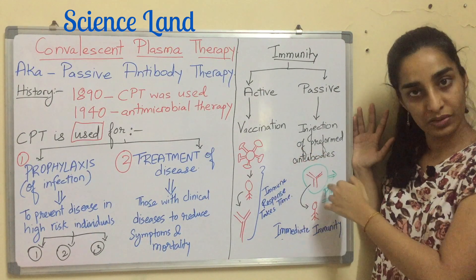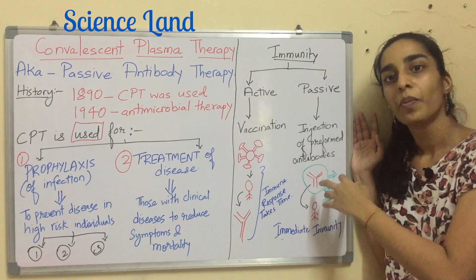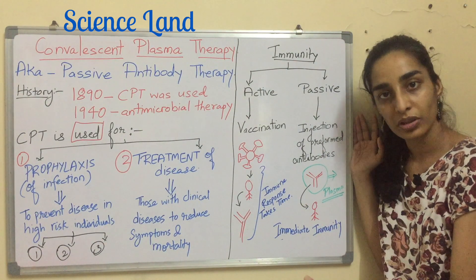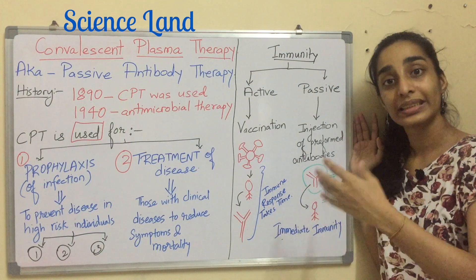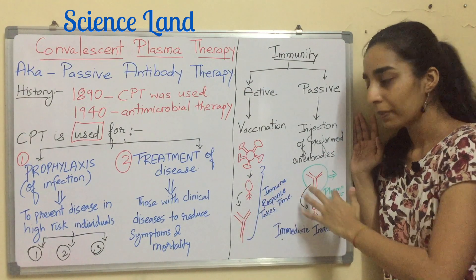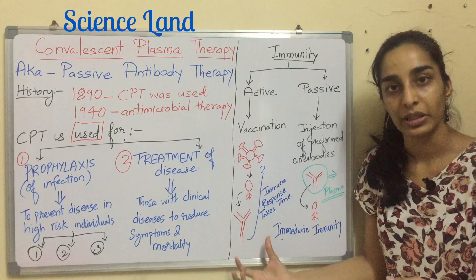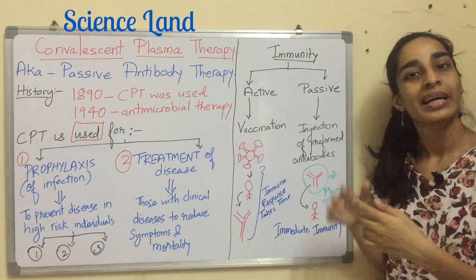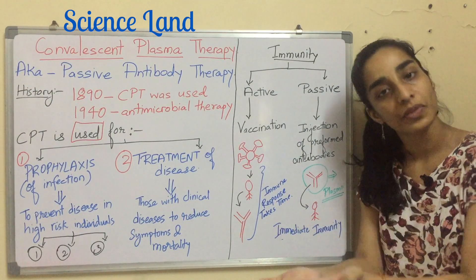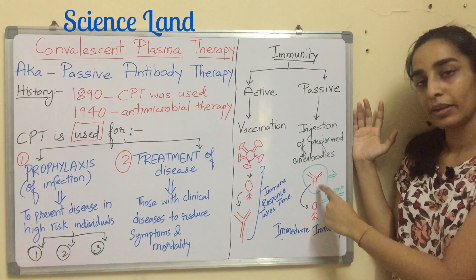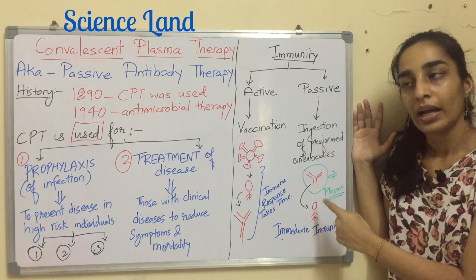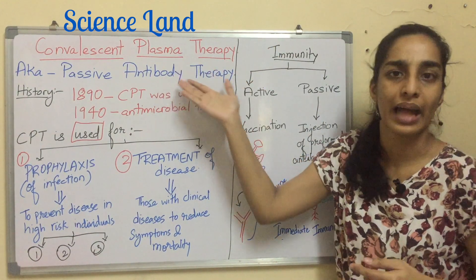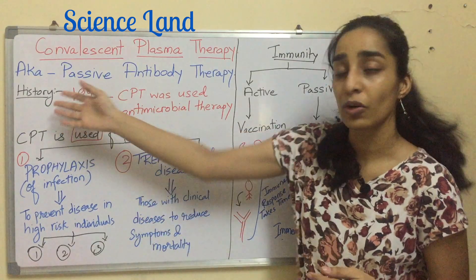In passive immunity, antibodies are directly injected to the individual without using a virus. The immunity is immediately given to the person, whereas in active immunity it takes time to be achieved. To remember this difference: in active immunity the person has to make his own food; here, the ready-made food is served to the person. Because the antibody is directly given, it is known as passive antibody immunity.